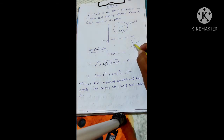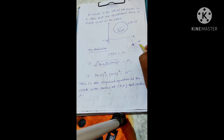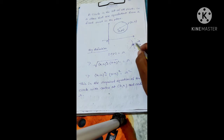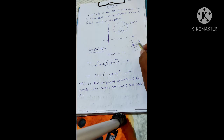From this fixed point, the distance of these points is always equal. This fixed point is called the center, and any point on this circle, if joined with the center, this line segment is called the radius.